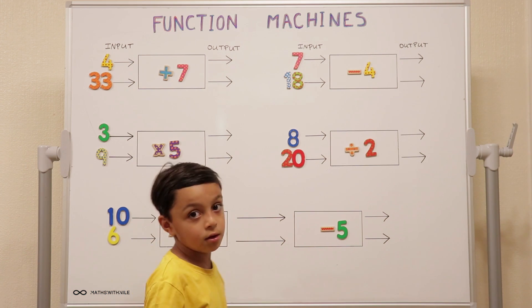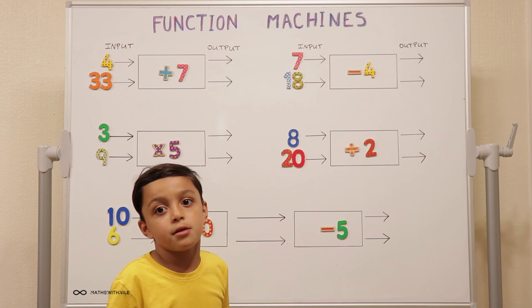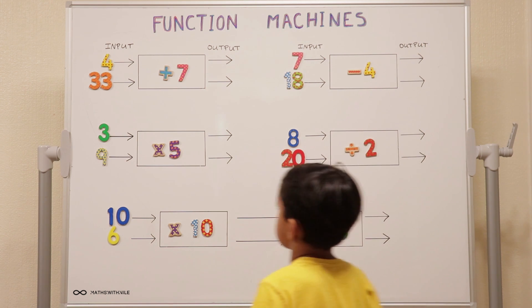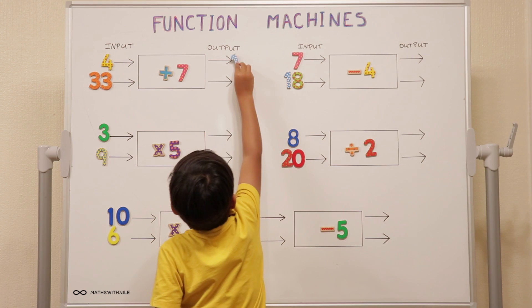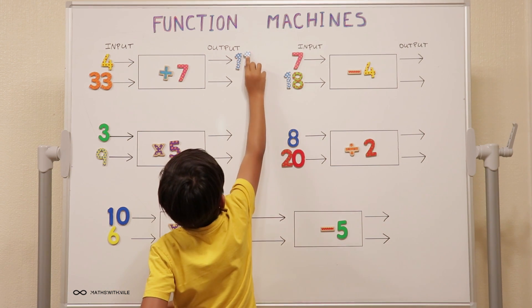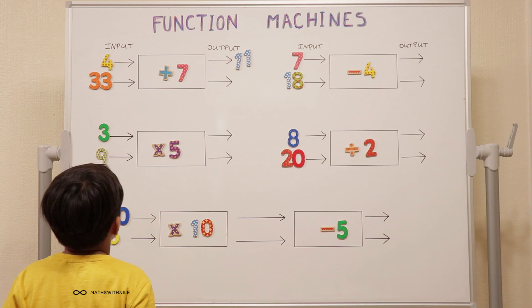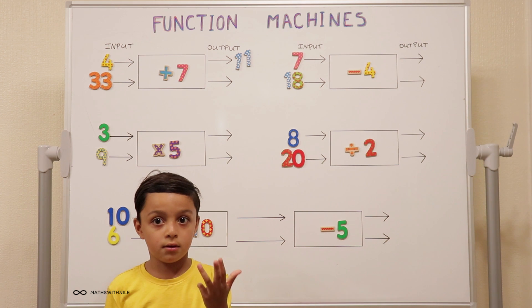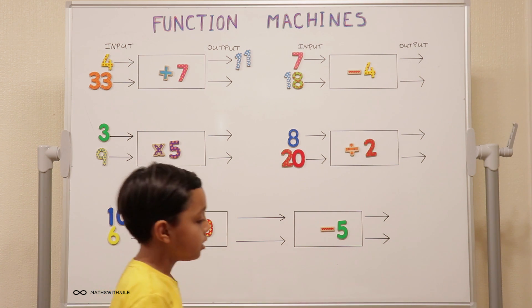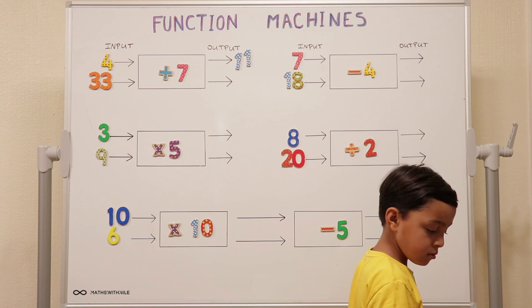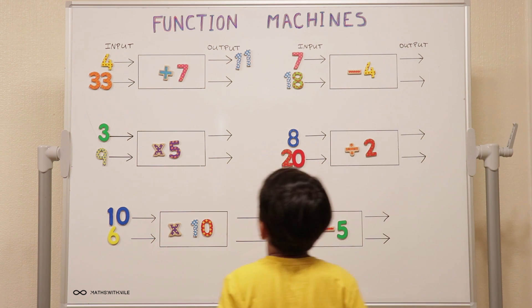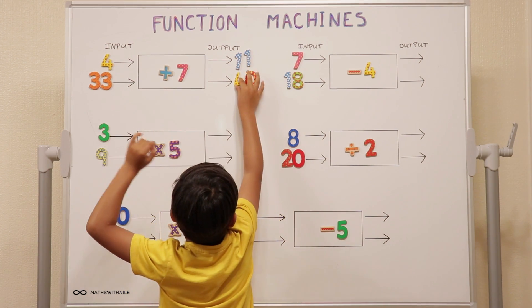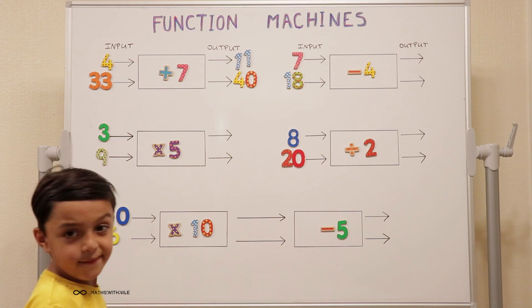So four plus seven, seven plus four, seven, eight, nine, ten, eleven. Good, I like how you turned that around to make it easier because the machine is commutated. Thirty-three plus seven, thirty-four, thirty-five, thirty-six, thirty-seven, thirty-eight, thirty-nine, forty. Very good. So in that function machine, when the input was four, what was the output? Eleven.